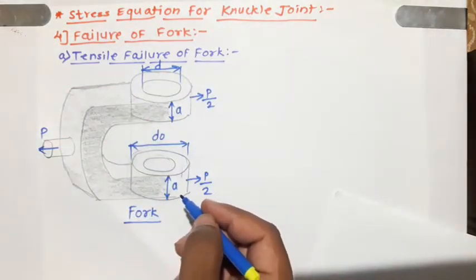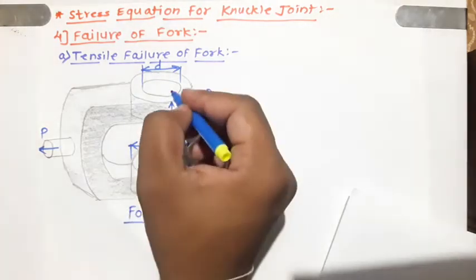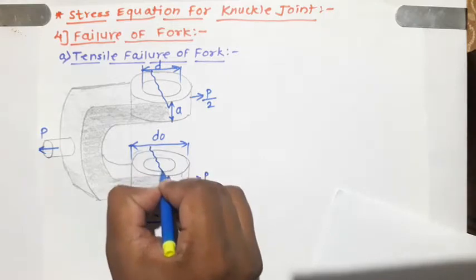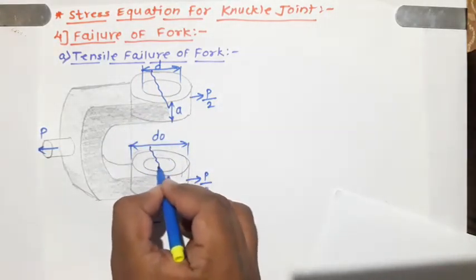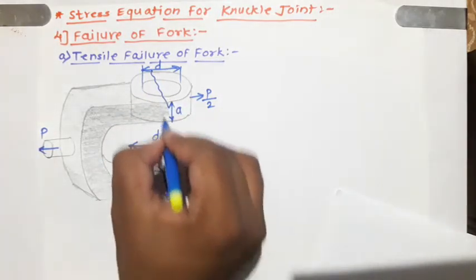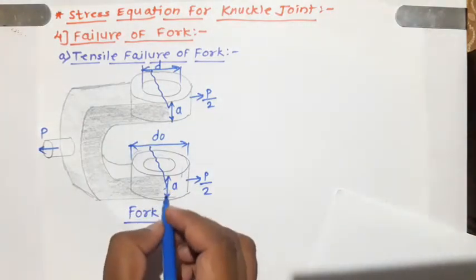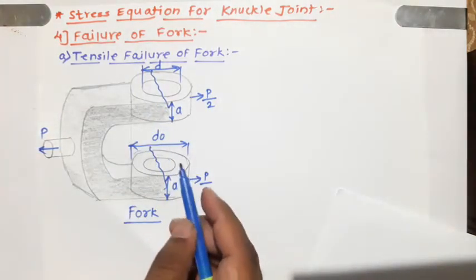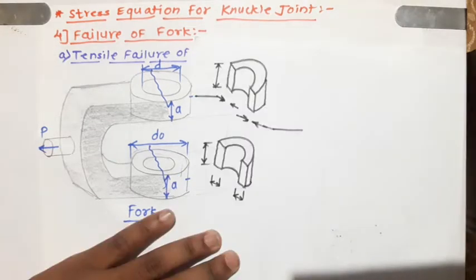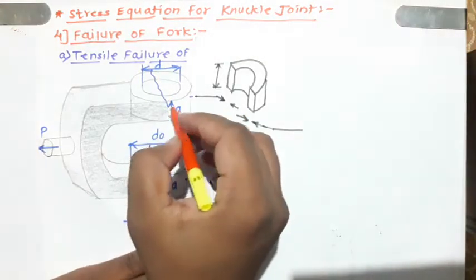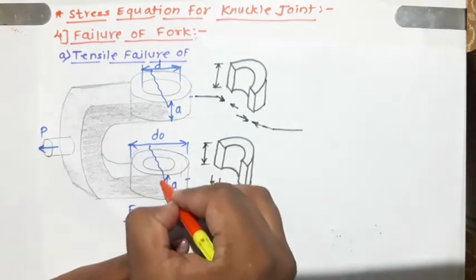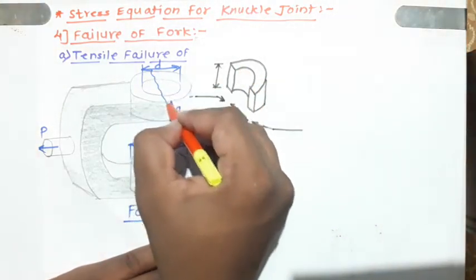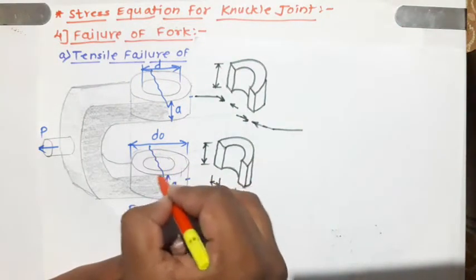Now let us consider the tensile failure of the fork. Any type of failure occurs at the weaker section. The weak section is at this region of the fork end. These two hollow cylinder portions of the fork form the weak sections. If tensile failure occurs, it will occur at these two sections. Let us draw the diagram of the fork after tensile failure.